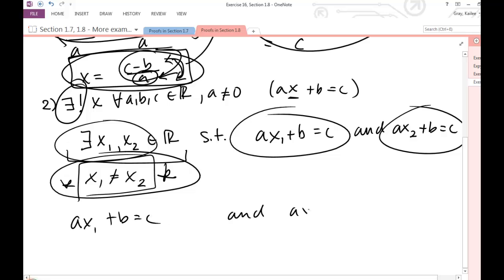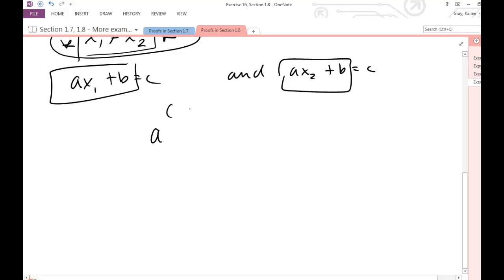If I know that ax1 plus b is equal to c and I know that ax2 plus b equals c, well since they're both equal to c, then they must be equal to each other, right? So I can set them equal to each other since c equals c. ax1 plus b must equal ax2 plus b. Then if we subtract b from both sides, ax1 equals ax2.